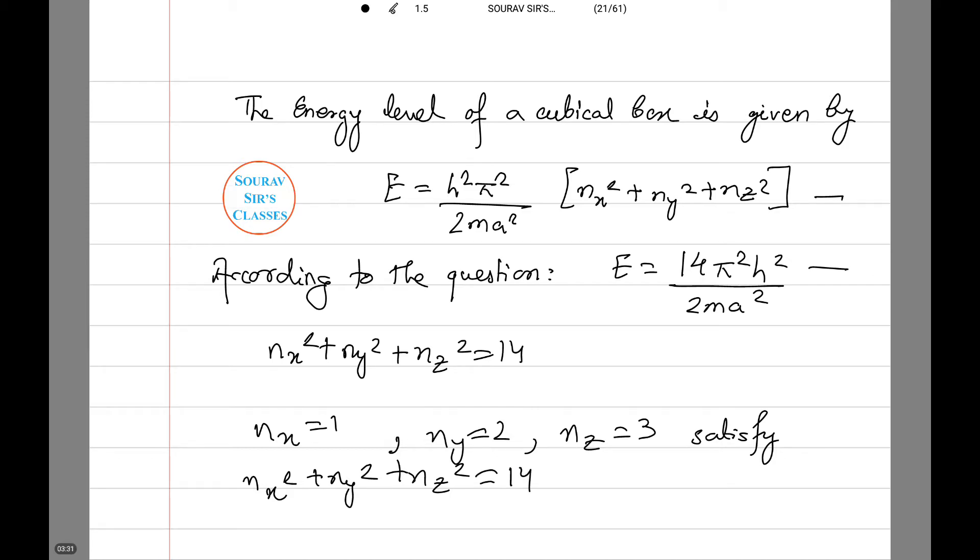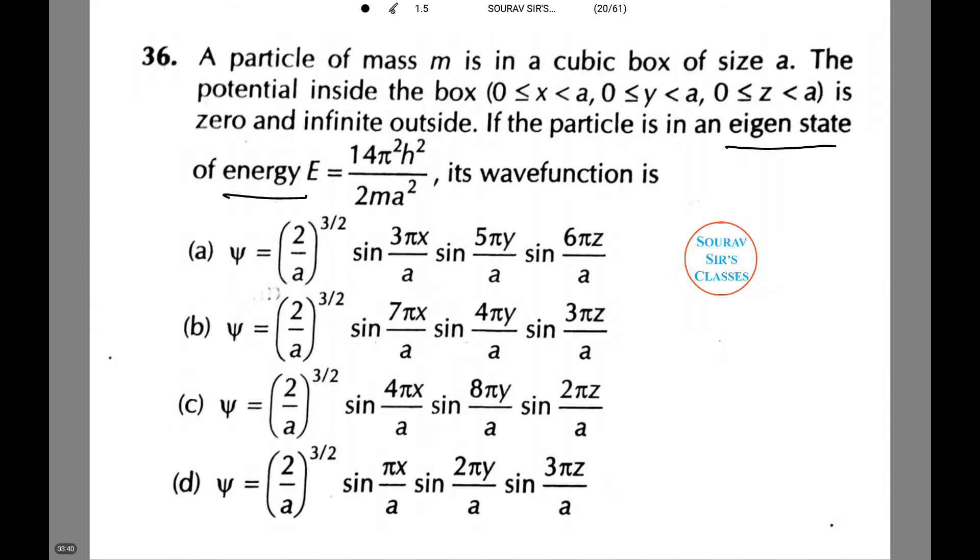These values have been obtained by seeing the answer options that have been given in the question. For example, we check the values according to each of these functions. Thus, option D is the only one which satisfies these values. Notice 1, 2, and 3.